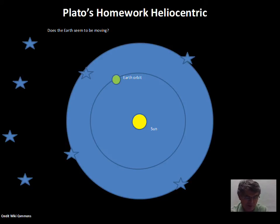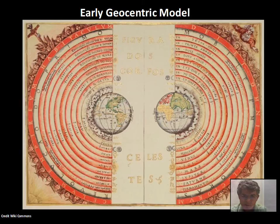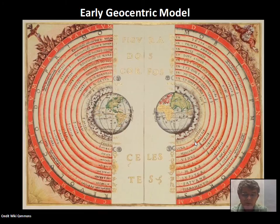Geocentric means Earth-centered; heliocentric means Sun-centered. The geocentric model was fully accepted for over 1,500 years until better observations, and really a telescope around 1600, changed things — which we'll talk about. There was nice artwork with these geocentric models: a map of the Earth at the center, with various labels for the contents of the solar system set out on their paths around the Earth.